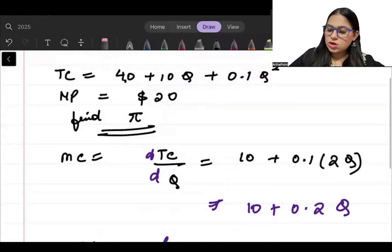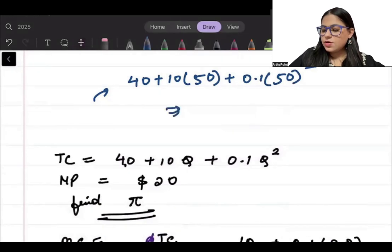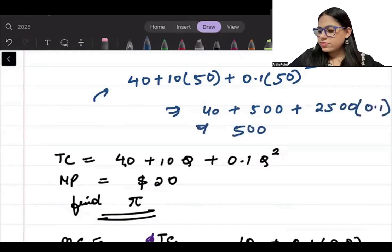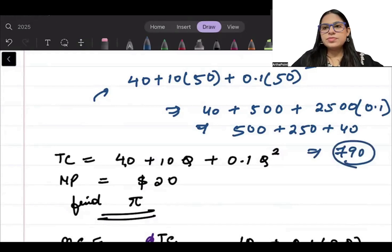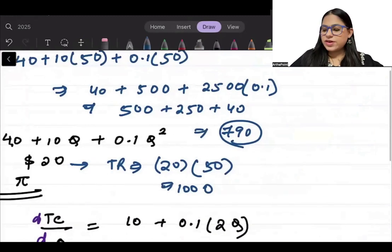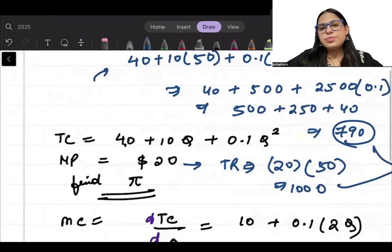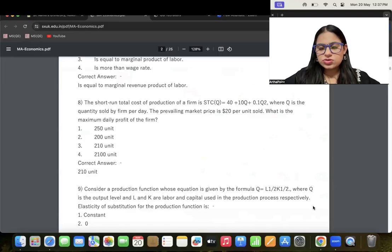If I find out what will be the total cost when Q is 50: 40 plus 10 into 50 plus 0.1 into 50 squared. This is going to give me 40 plus 500 plus 250, which gives me 790. What will be your total revenue? Price into quantity. Quantity is 50. That will give me 1000. When you find the gap between 1000 minus 790, that gives me 210. So 210 will be the profit of the firm. This kind of simple questions will be asked to you, and you have to go ahead and do these questions.